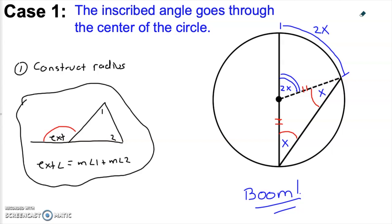The inscribed angle that we started with is exactly one half of its intercepted arc. Boom! But not so fast — this is only Case 1. This feels very satisfying and it is completely convincing, but this is only Case 1.